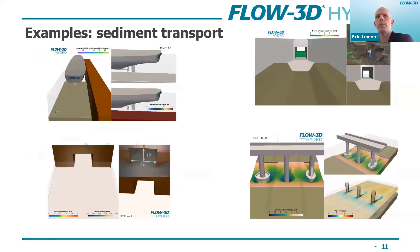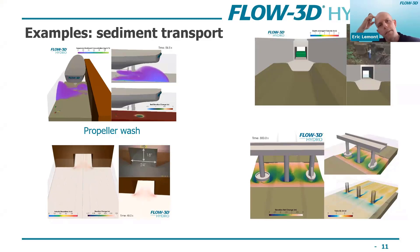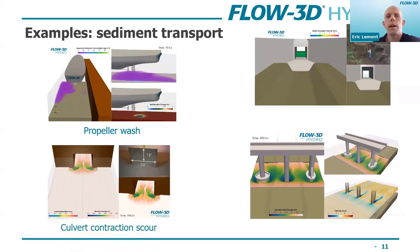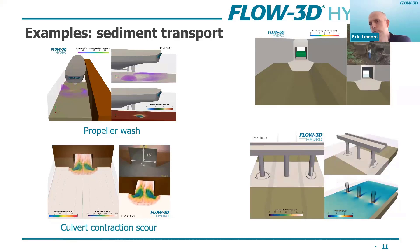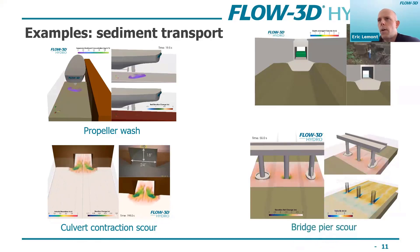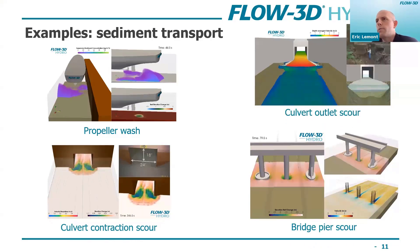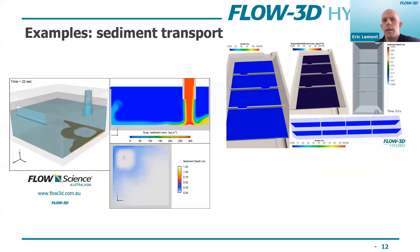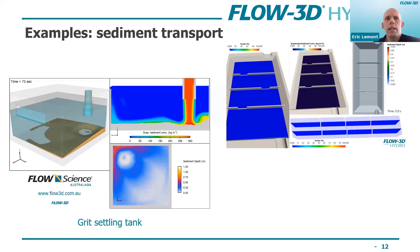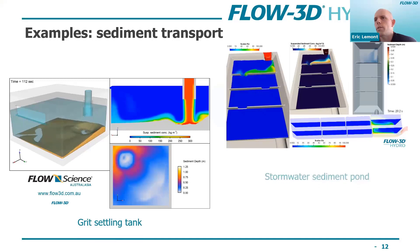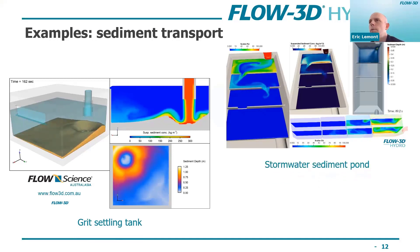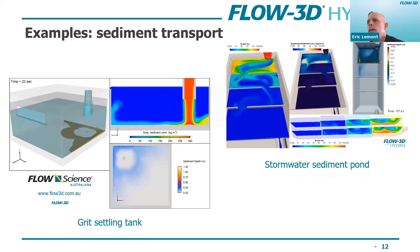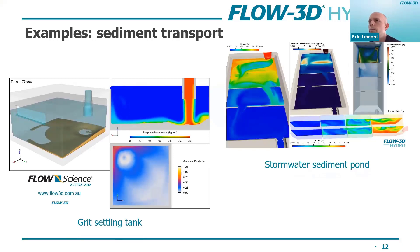Some example applications: a propeller wash example where a simplified propeller kicks up scour; a simple contraction at a culvert causing scour; a bridge pier example looking at different pier configurations and how scour is impacted; and a culvert outlet scour example. For deposition examples: a simple grit tank looking at settling, and a stormwater pond where the top bay fills up with sediment as flow comes in, allowing you to track suspended sediment moving through and how much settles out.